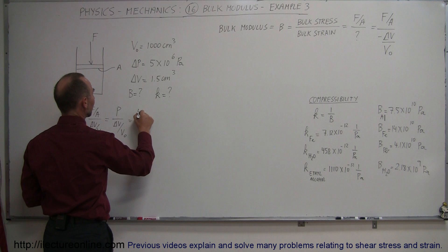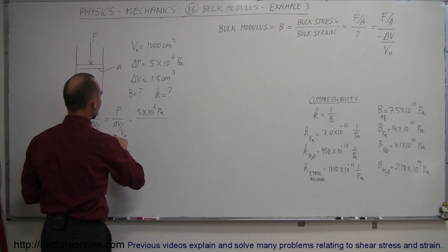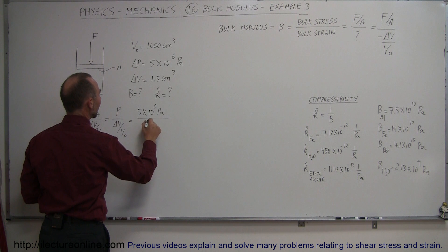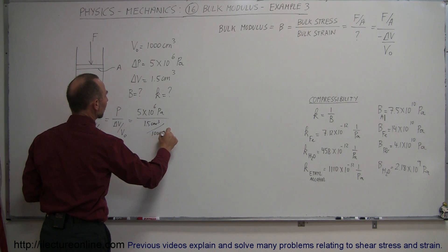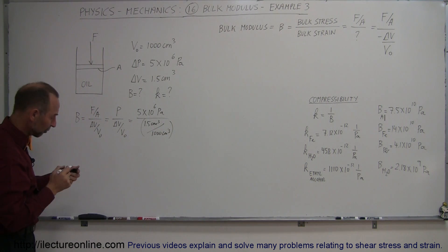The pressure applied was 5 times 10 to the 6th pascals, and the change in the volume of the original volume is 1.5 cubic centimeters divided by the original volume of 1,000 cubic centimeters. So that's the ratio of the change in the volume to the original volume.